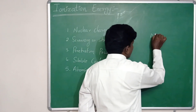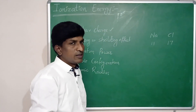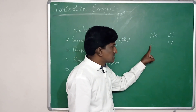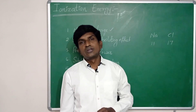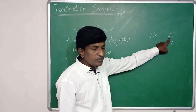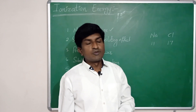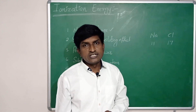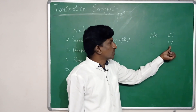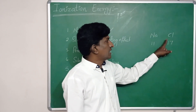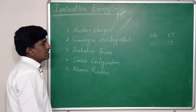Let us take sodium and chlorine as an example. The atomic number of sodium is 11 and the atomic number of chlorine is 17. As we move from sodium to chlorine, the number of electrons in the outermost orbit increases, and at the same time the number of protons in the nucleus also increases. The increased nuclear charge on the outermost orbit in chlorine means we require more energy to remove one electron from chlorine. That's why ionization energy increases — chlorine requires more ionization energy than sodium.